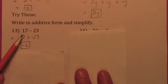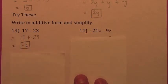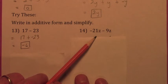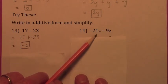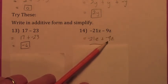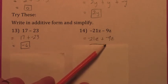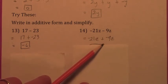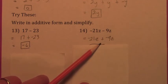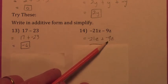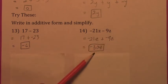I think you're less likely to make a mistake if you change to additive form. For example, negative 21z minus 9z — is this 30z? Is it negative 30z? If you change to additive form, it becomes negative 21z plus negative 9z, and negative 21z plus negative 9z is negative 30z.